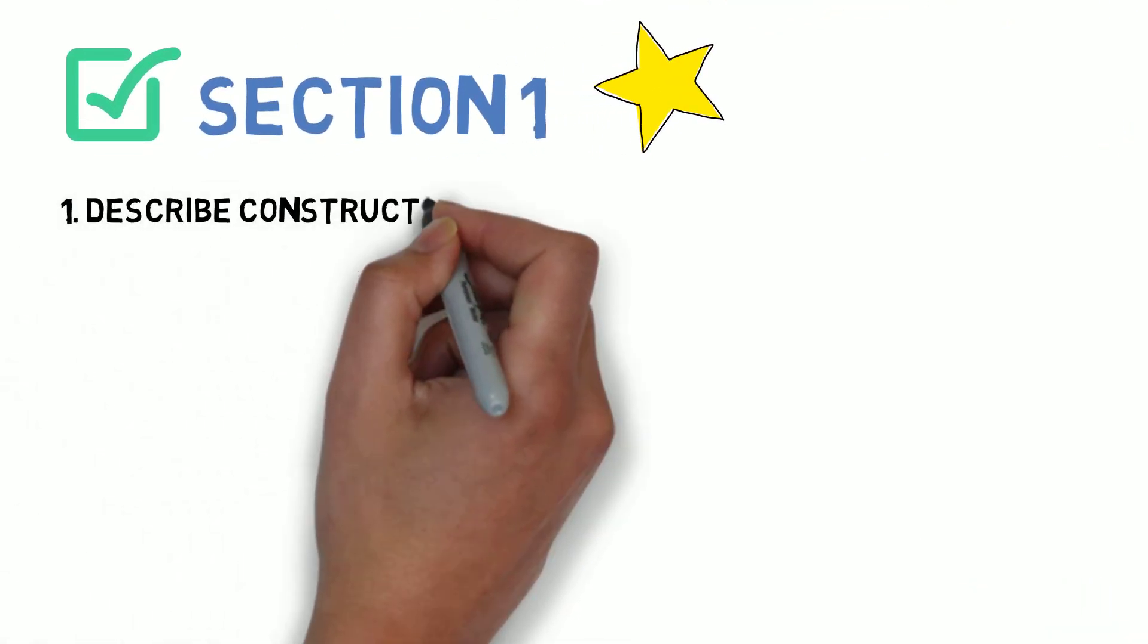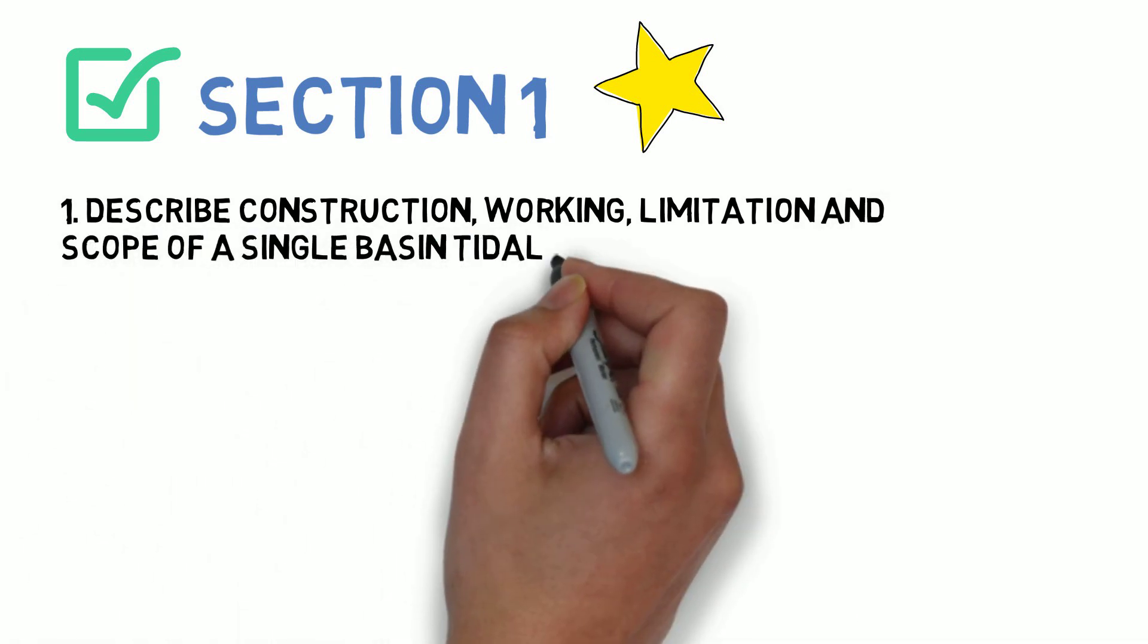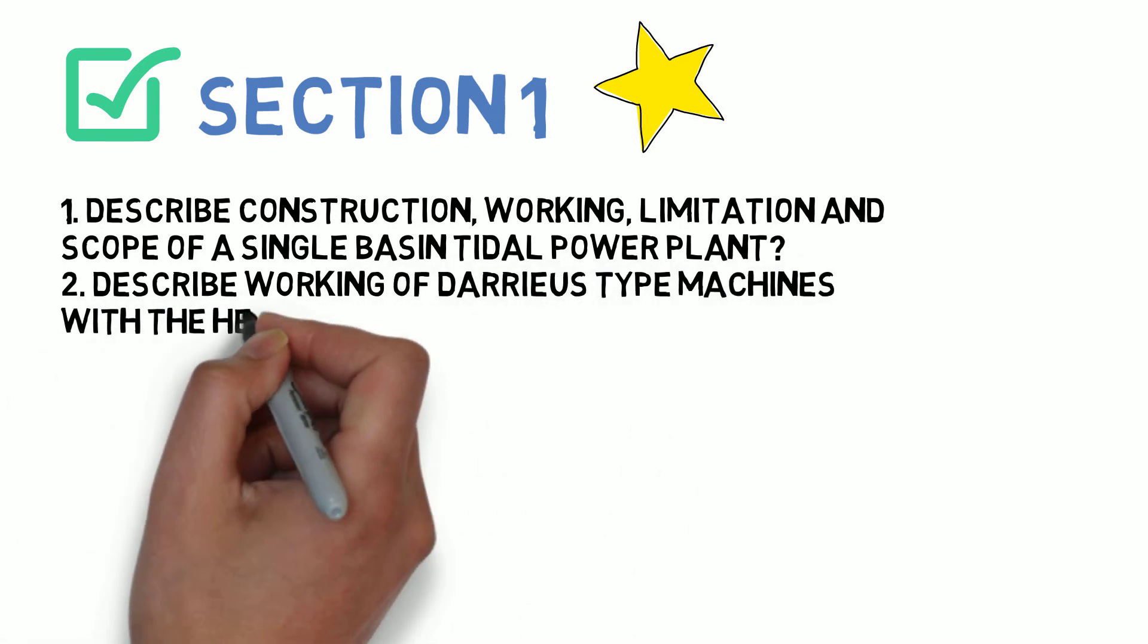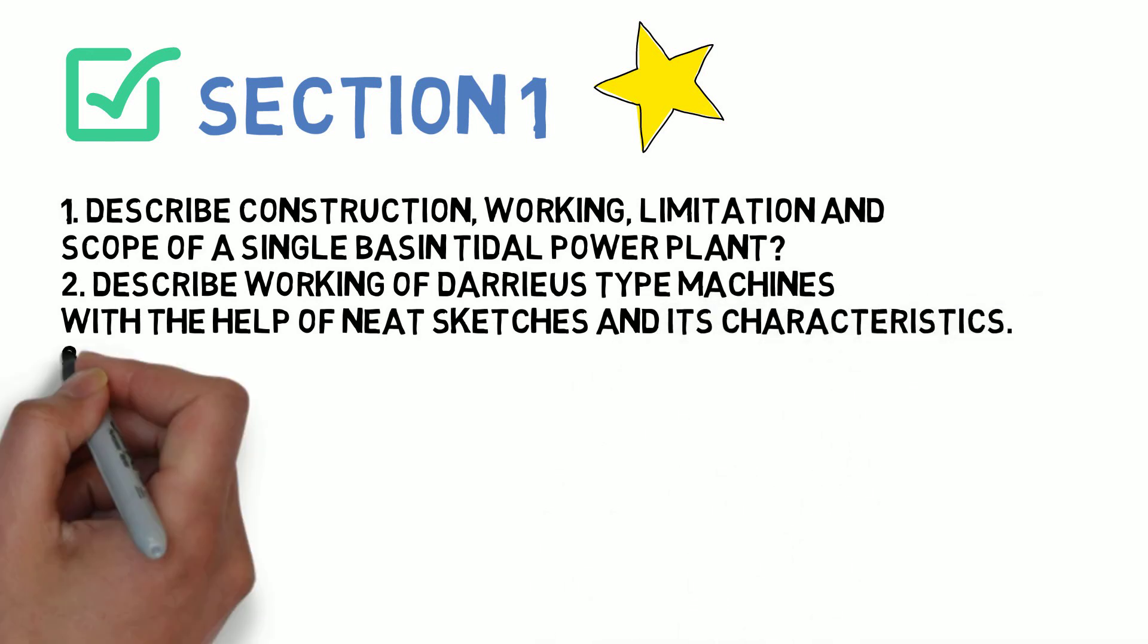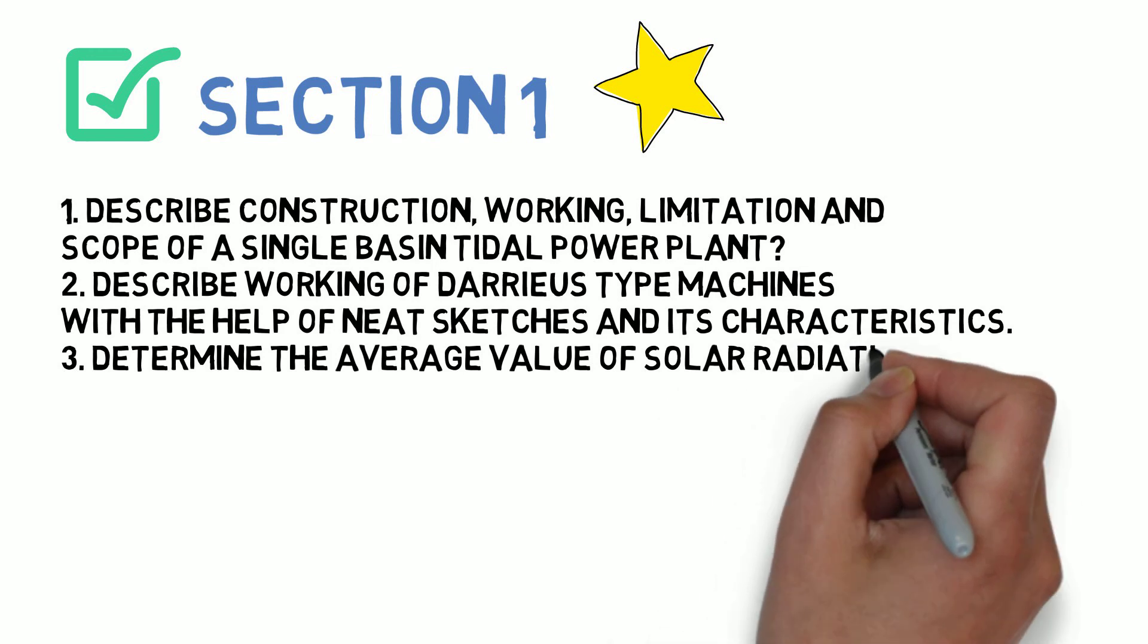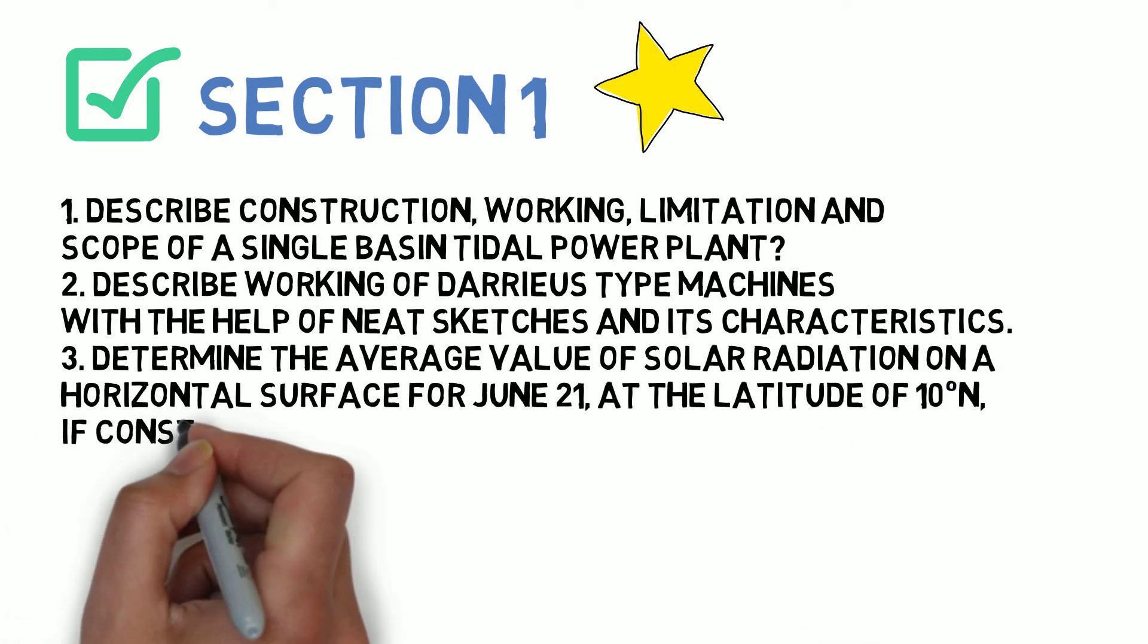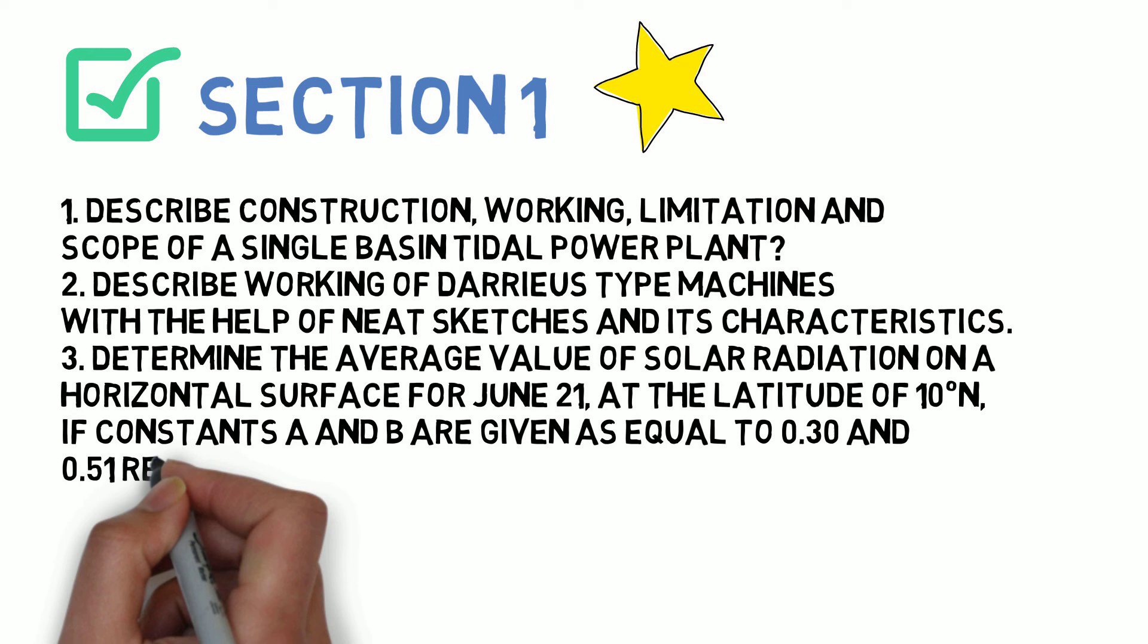Describe construction, working, limitation, and scope of a single basin tidal power plant. Next, describe working of Darrieus type machines with the help of neat sketches and its characteristics. Next, determine the average value of solar radiation on a horizontal surface for June 21 at the latitude of 10 degrees North, if constants A and B are given as equal to 0.30 and 0.51 respectively, and the ratio N/N is equal to 0.55.